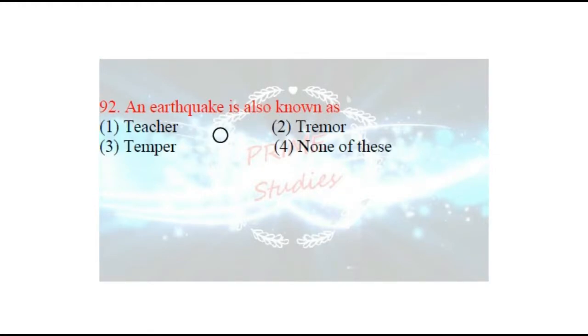Next question: an earthquake is also known as what? Bhukamp ko kya bolte hain? The options are: trimmer, temper, or none of these. Bhukamp ko bolte hain 'tremor' — a shaking or jolt.